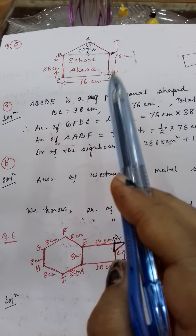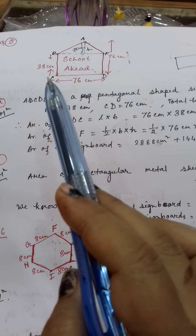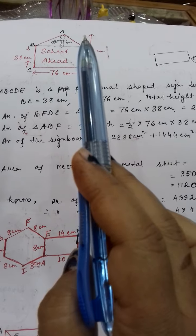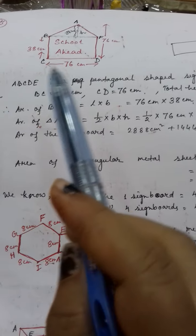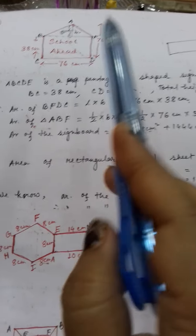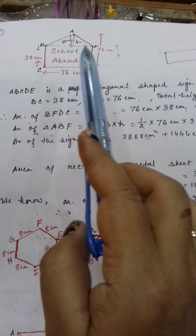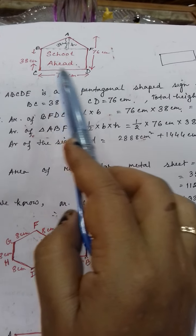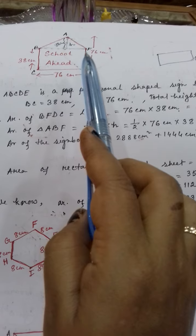I have labeled the pentagonal shape A, B, C, D, F. Now what you will do is make it into two different polygons. So what I have done is joined points B and F. After joining these two points, you get rectangle B, C, D, F and triangle A, B, F.